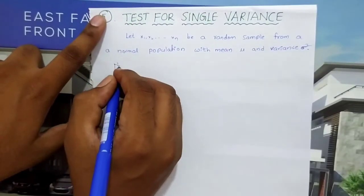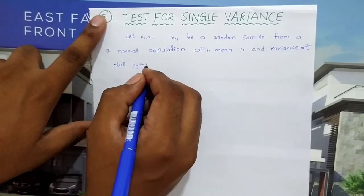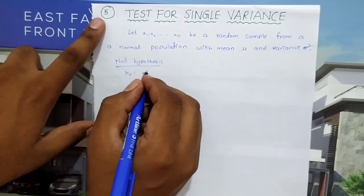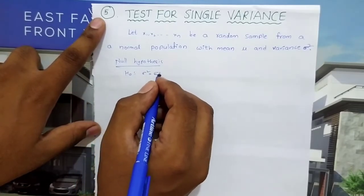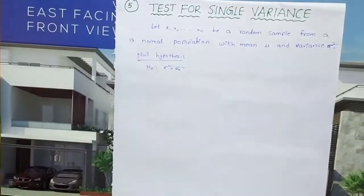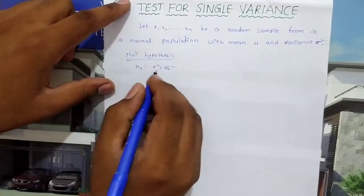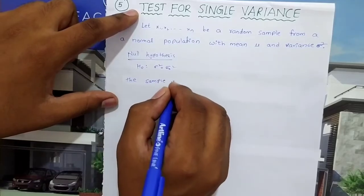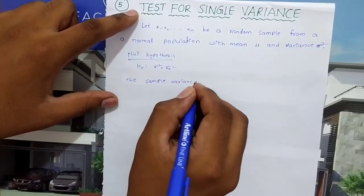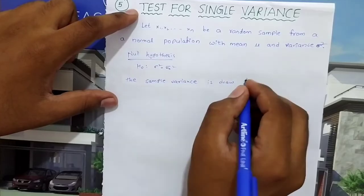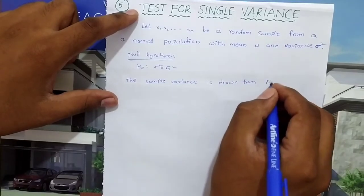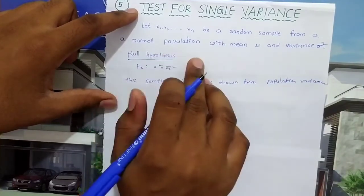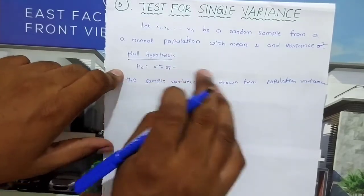Null hypothesis H₀: σ² = σ₀². This means the sample variance is drawn from the population variance — there is no significant difference between sample variance and population variance.